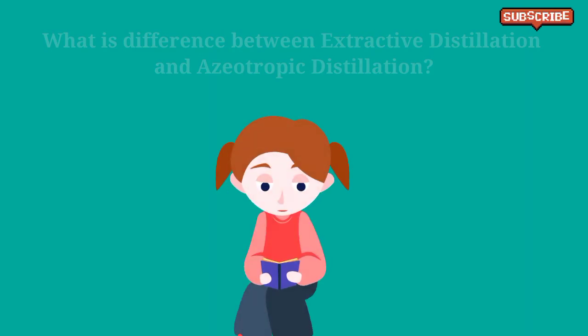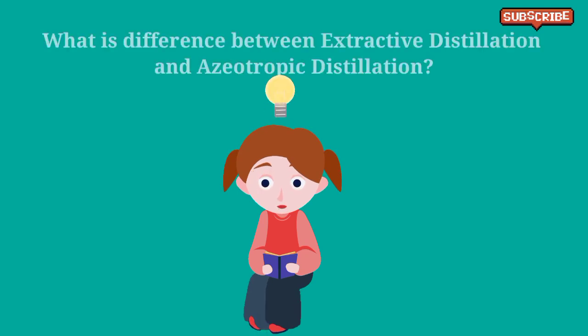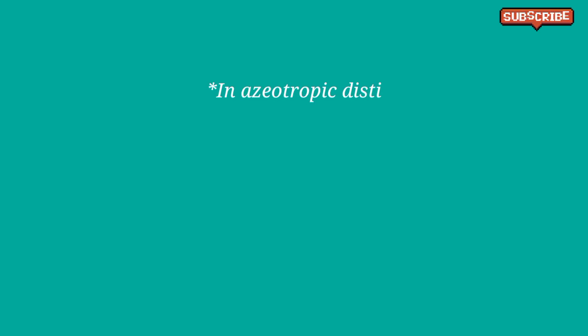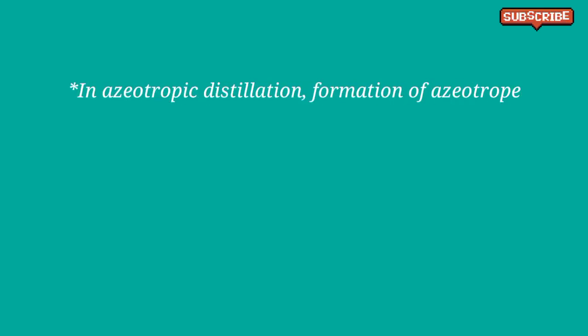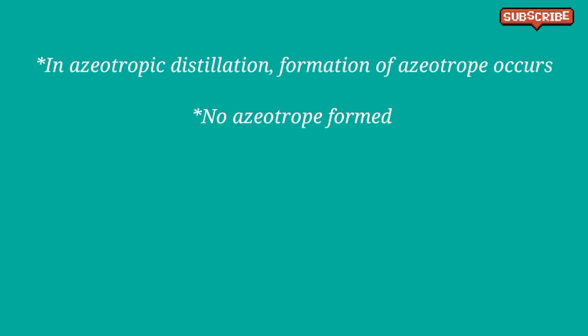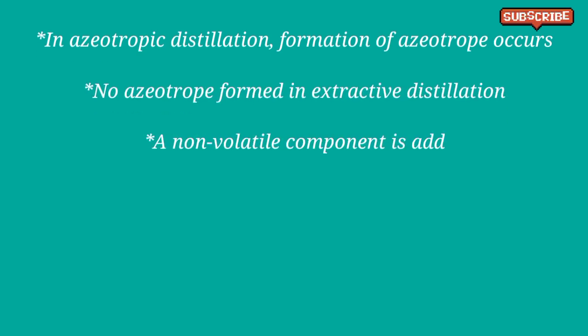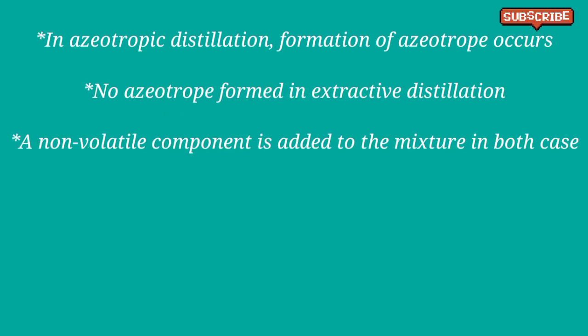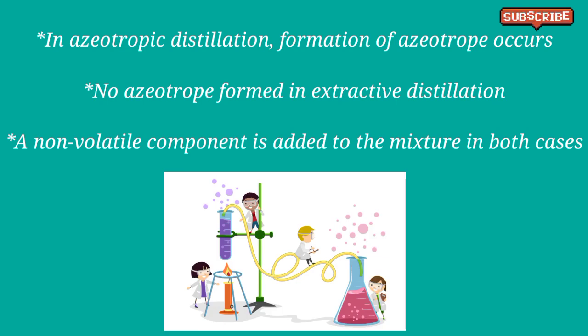The main difference between extractive and azeotropic distillation is that in azeotropic distillation, the formation of an azeotrope occurs which facilitates the separation of components of a mixture, whereas in extractive distillation, no azeotrope formation takes place. In both these distillation techniques, a non-volatile component is added to the mixture that can affect the volatility of components in the mixture.